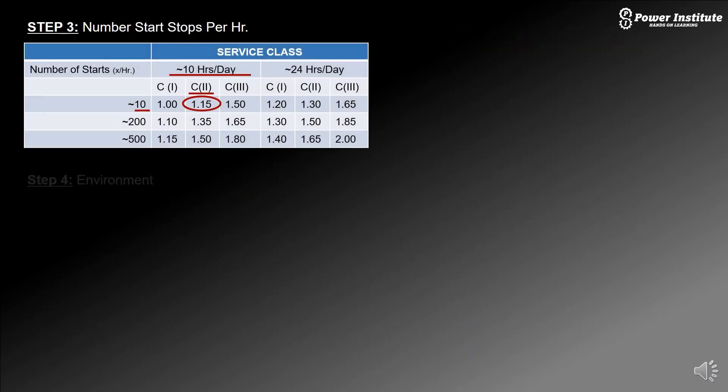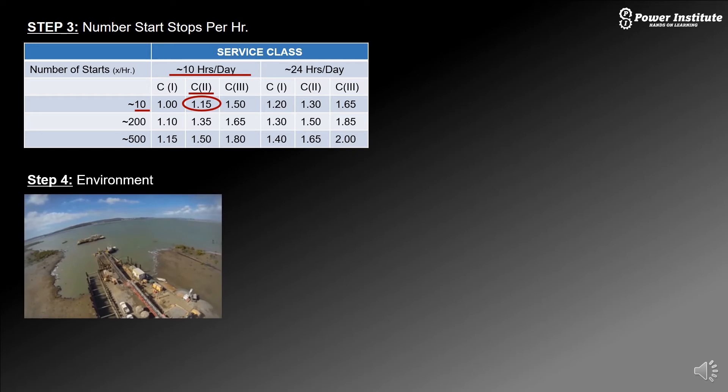Starts and stops per hour. He told us there were less than 10 with a class two service at 10 hours a day. That adds a 1.15 service factor on top of that. And the environment - it's right by the water so we know there's moisture, dust from the aggregate being conveyed, and its location in Mississippi is very humid. And it's an incline application. So we have to make sure we cover all our bases there.